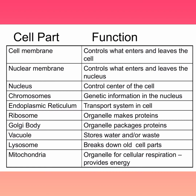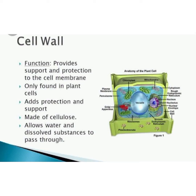Before discussing each organelle, you need to understand the four main components of a typical cell. First is the cell membrane — the outer boundary. Second is cytoplasm — a jelly-like substance. Third is the nucleus — called the brain of the cell. And fourth are the cell organelles, which include all the names mentioned.